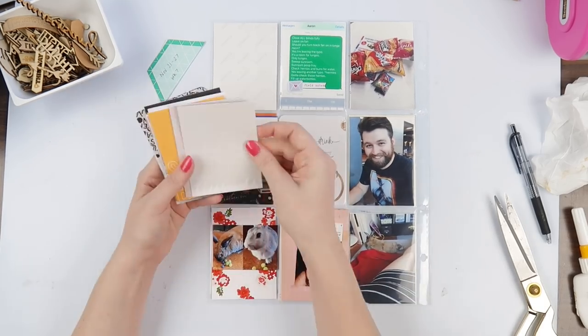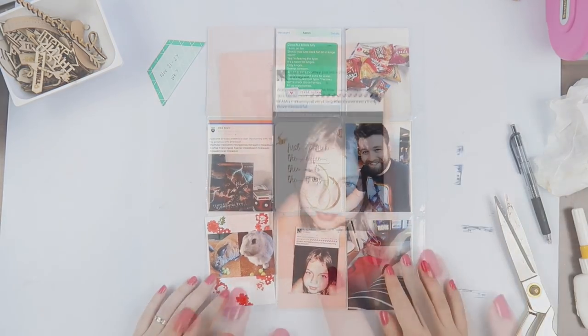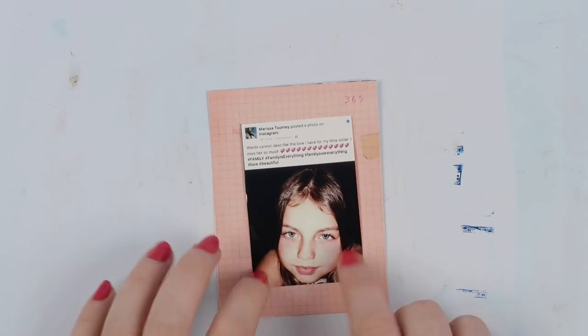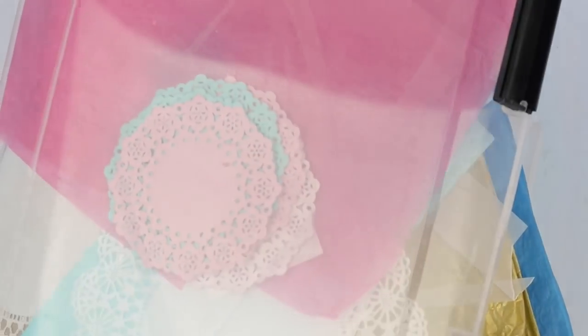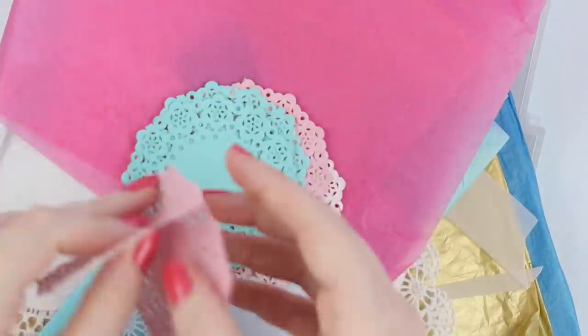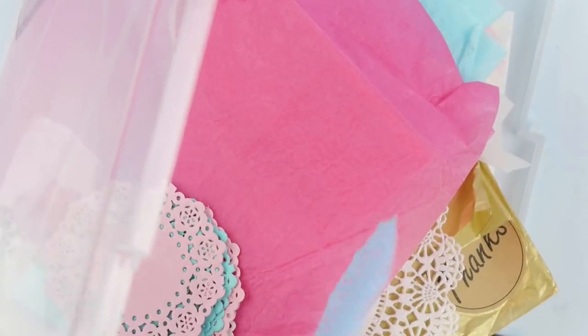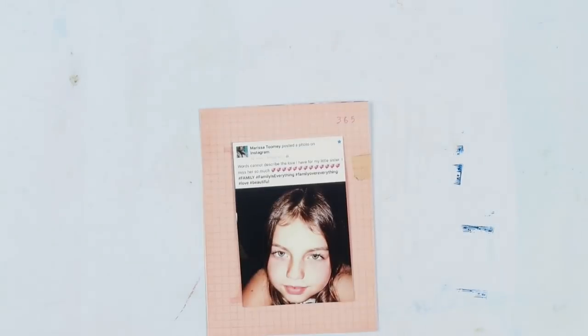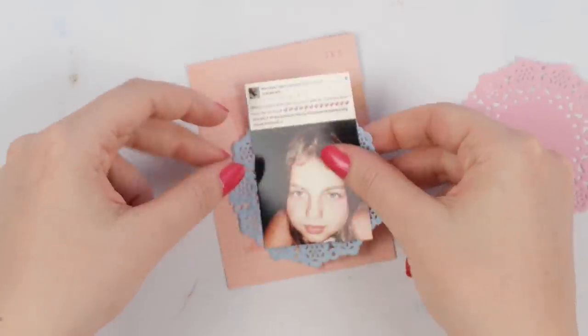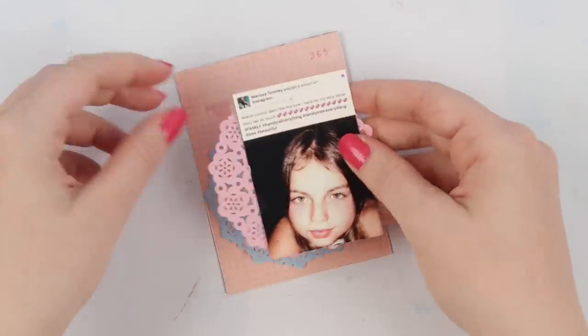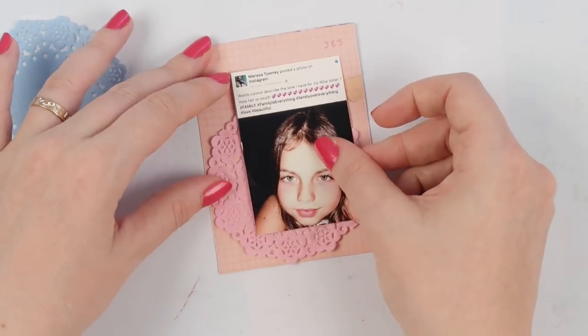On my desk I have this little box and in it I keep project life cards. These are cards that are left over from kits, left over from some design team stuff that I did last year. They're bits of six by six paper that I've cut up into cards, just random bits and pieces. This is from a cut apart paper pad sheet, I think from Crate Paper by the looks of it.